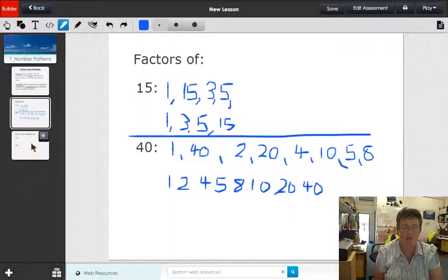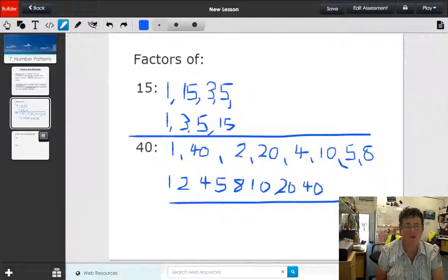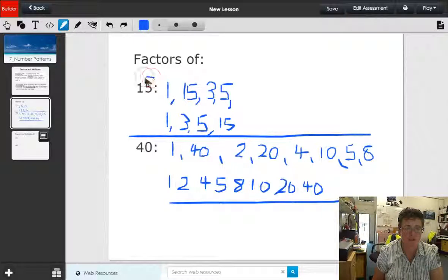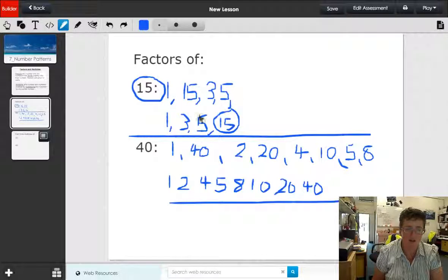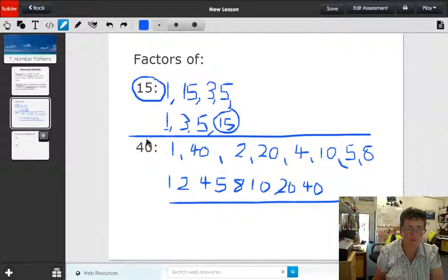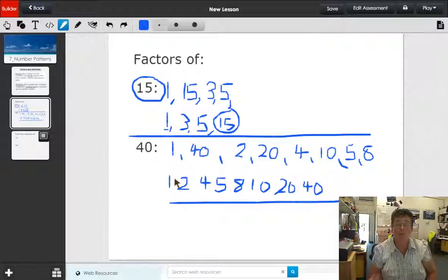So that's factors. You'll see that all the factors have the number that we've started with and they all have the number one. So 40 is here and the number one. The factors are all less than or equal to the number that you start with.